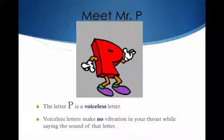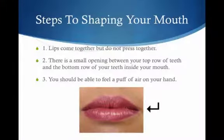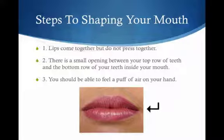If you are having trouble making the correct sound of P and B, let's focus on the shaping of your mouth. For P, your lips come together but do not press together. The picture below shows what your lips should look like. Your teeth are also not touching — there should be a small opening between the top row and the bottom row of your teeth.